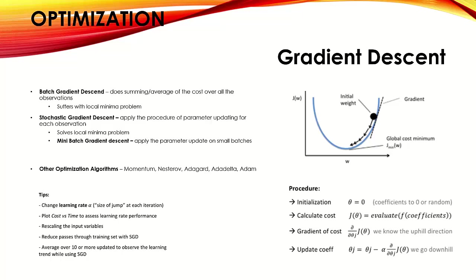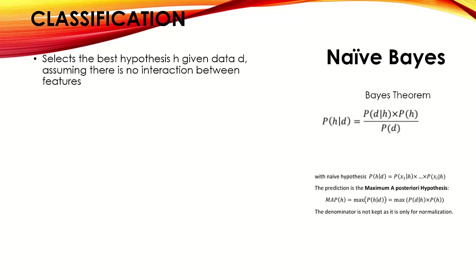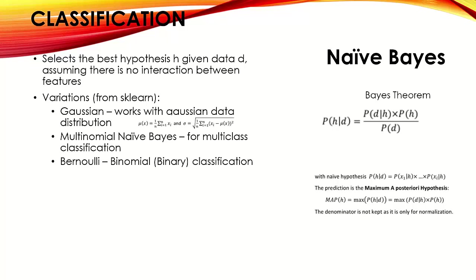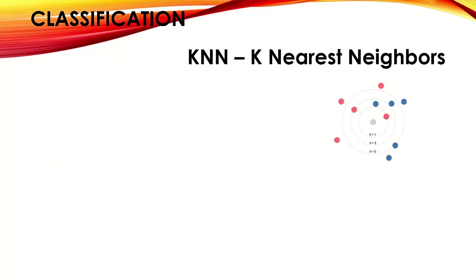Naive Bayes is used for classification. It is based on Bayes' theorem using posterior and prior probabilities, selecting the best hypothesis H given data D — assuming no interaction between features, which is what makes it 'naive.' Variations include Gaussian (for Gaussian-distributed data), Multinomial (for multi-class classification), and Bernoulli (for binary classification). Advantages: very fast. Use cases: spam email classification, news and article classification, and other text classification tasks.